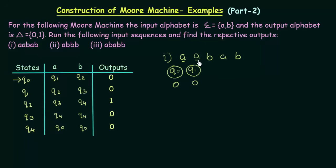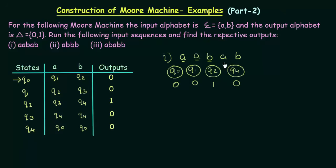The next input is A and we are in Q1. In Q1 if we get A, it goes to Q2. Q2 produces the output 1. Then the next input is B and we are in Q2. In Q2 if we get B, it goes to Q4. Q4 produces the output 0. Then the next input is A and we are in Q4. In Q4 if we get A, it goes to Q0, and Q0 produces the output 0.